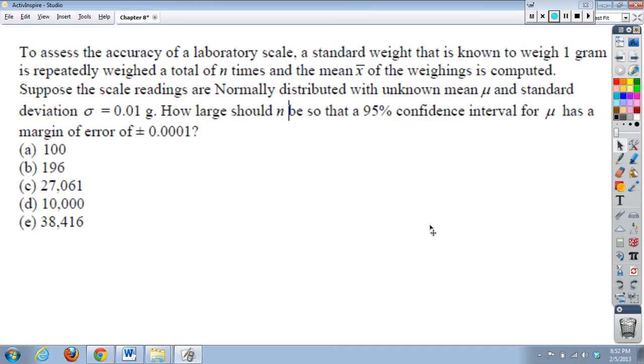Number five. To assess the accuracy of a laboratory scale, the standard weight that is known to weigh one gram is repeatedly weighed a total of n times. And the mean x bar of the weighings is computed. Suppose the scale readings are normally distributed with unknown mean mu and standard deviation .01 grams. How large should n our sample size be so that a 95% confidence interval for mu has a margin of error of .0001? Now,